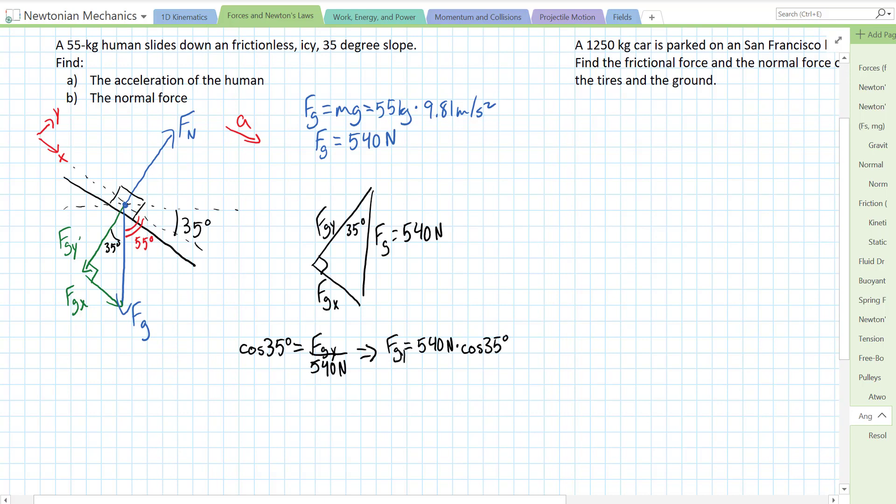fgy. And fgy equals, plug it into a calculator, 540 times cos of 35. Ends up being, make sure my calculator is in degree mode. 540 cos of 35 is 440 newtons. 442 newtons, let's say. I'm going to not round until the end.